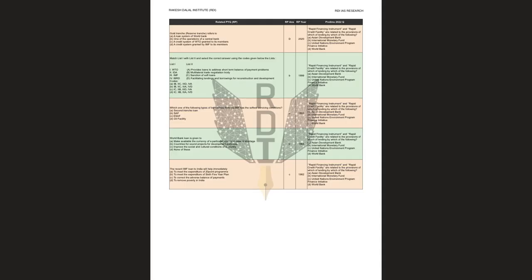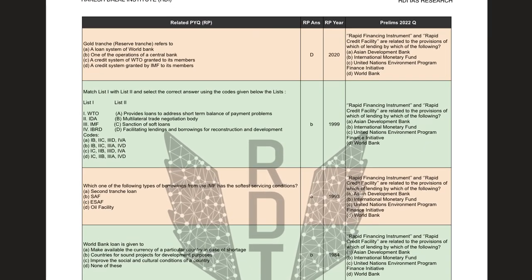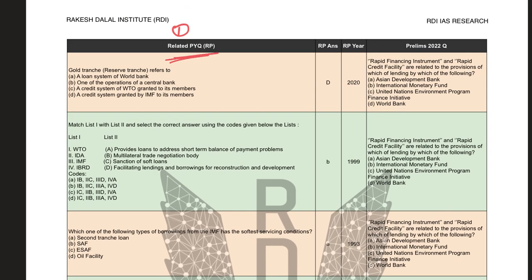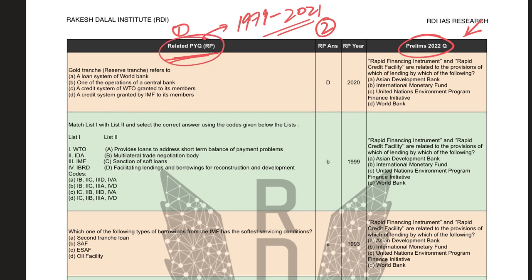The analysis has been done in tabular form with four columns. Starting from the left, the first column is the related PYQ. In the last column we have a question from Prelims 2022. The related PYQ in the first column can be from 1979 till 2021 — all years have been studied and compiled. The second column is the answer to the related PYQ. The third column is the year of the related PYQ, and the fourth column is the Prelims 2022 question being compared.